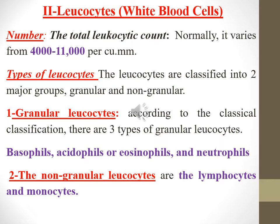Leukocytes, or white blood cells. The total leukocytic count normally varies from 4,000 to 11,000 per cubic millimeter. Types of leukocytes: they are classified into two major groups, granular and non-granular.